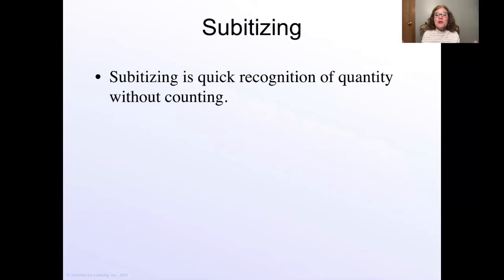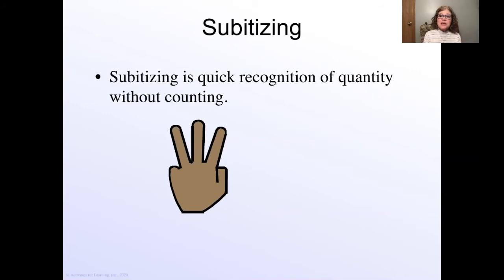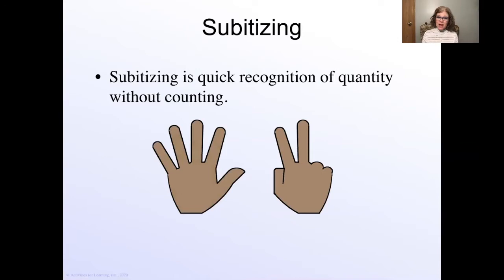Subitizing basically is a quick recognition of quantity without counting. So what does that look like? Can you tell me how many fingers are here? Three. Right. That is subitizing. You were able to identify that that is three without counting each individual finger, weren't you? Let's try another one. How many is that? Seven. Right. Subitizing. You were able to see that that was seven fingers and you did not have to count them. Why is that? Because our minds can see groups of five or less without having to count.